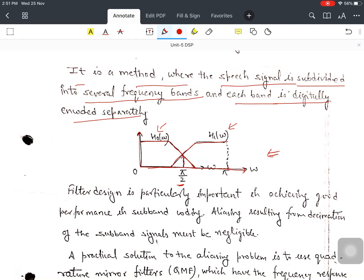At this point, the frequency omega is pi by 2 and here you are getting pi. Filter design is particularly important in achieving good performance in subband coding. Aliasing resulting from decimation of the subband signal must be negligible. This should be our motive.